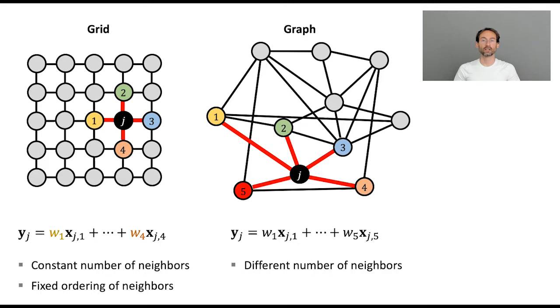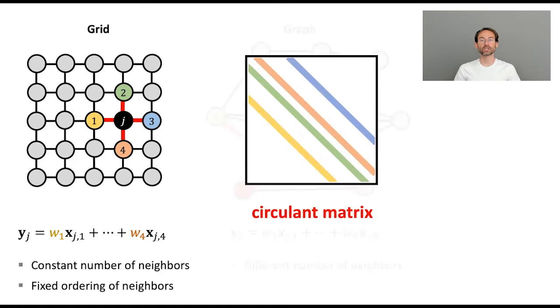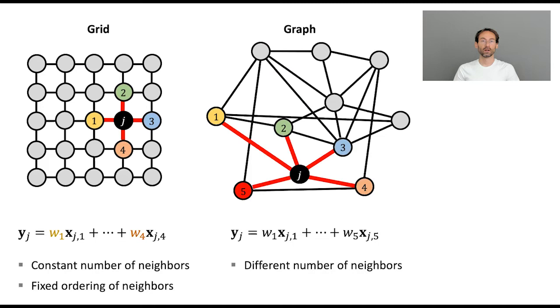Another thing to observe is that on the grid, we have a fixed ordering of the neighbors. We can always talk about the node to the left, a node to the right, and this allows us to always apply the same weight to the first node, to the second node, and so on. This is exactly the weight sharing in convolutional neural networks that I mentioned before. If we represent it as a matrix, we see a special structure that emerges. We call it circulant matrix. And because circulant matrices commute, we also have commutativity with the shift, which is also a circulant matrix. And this property is called shift equivariance. That's exactly the inductive bias of CNNs.